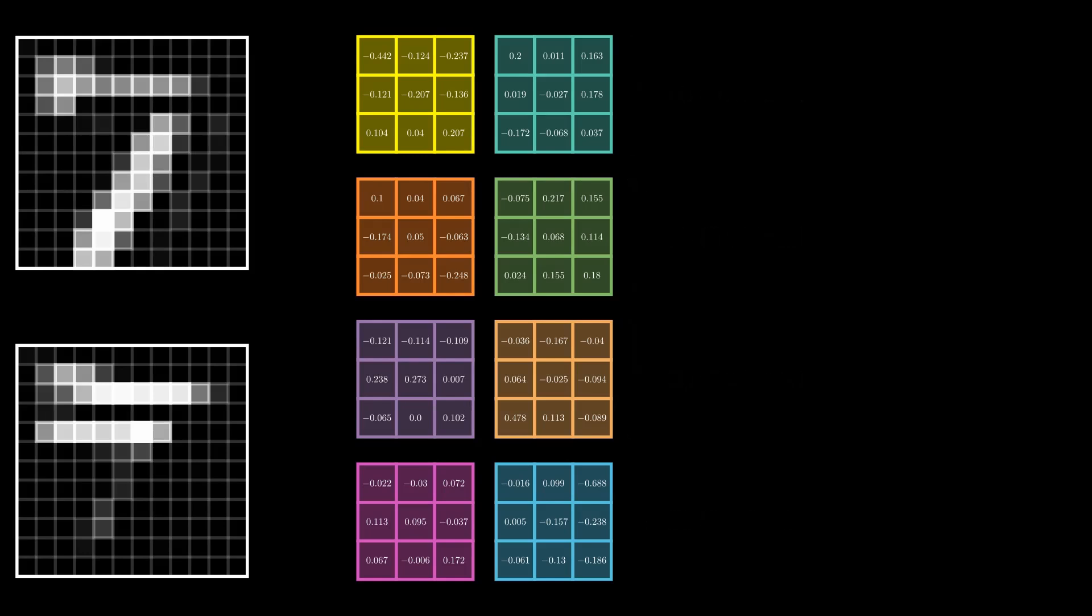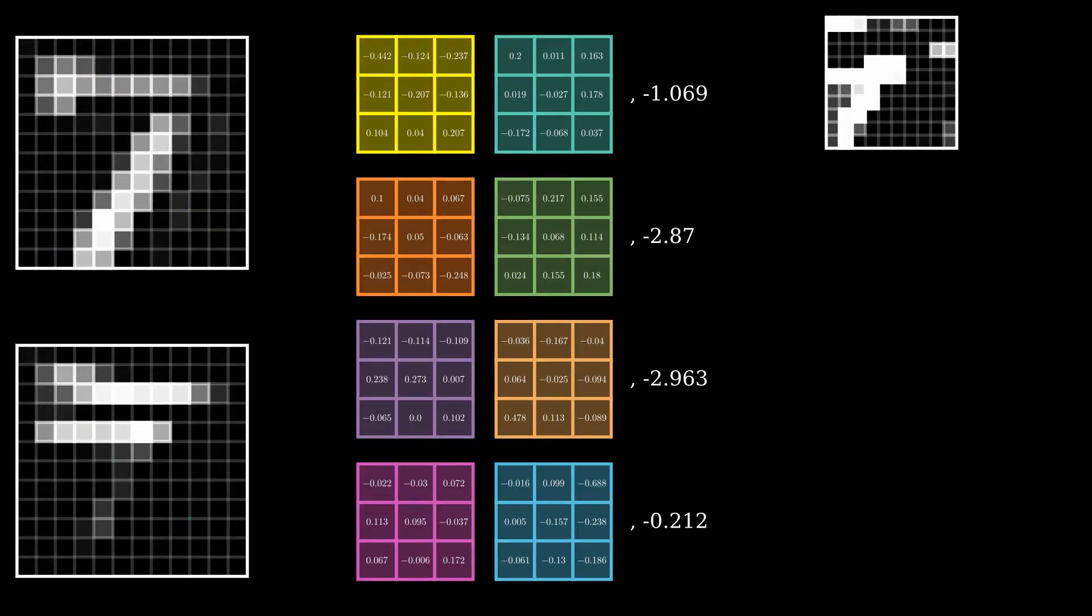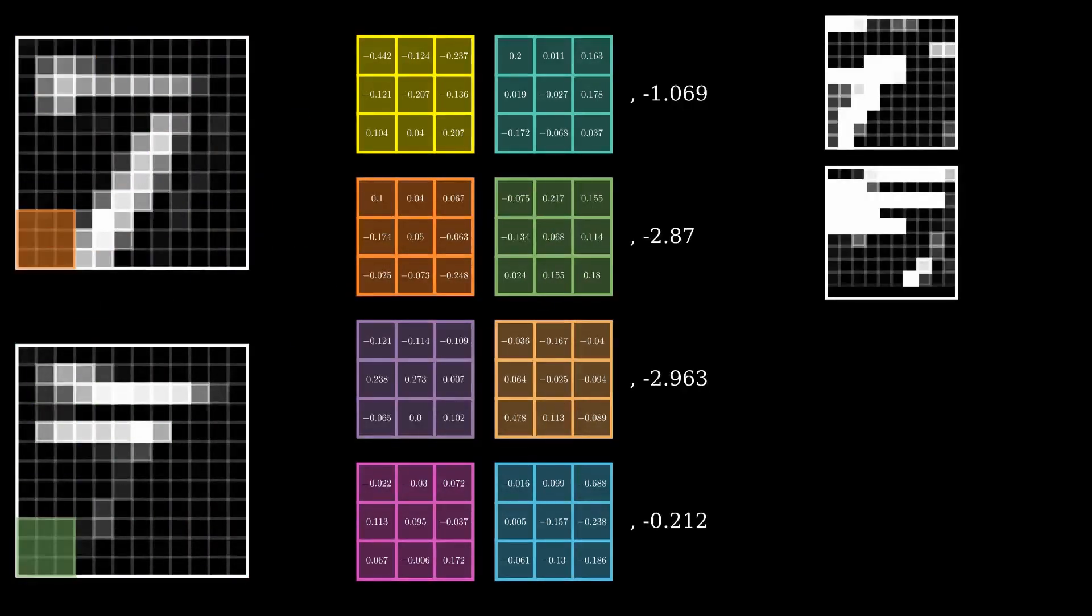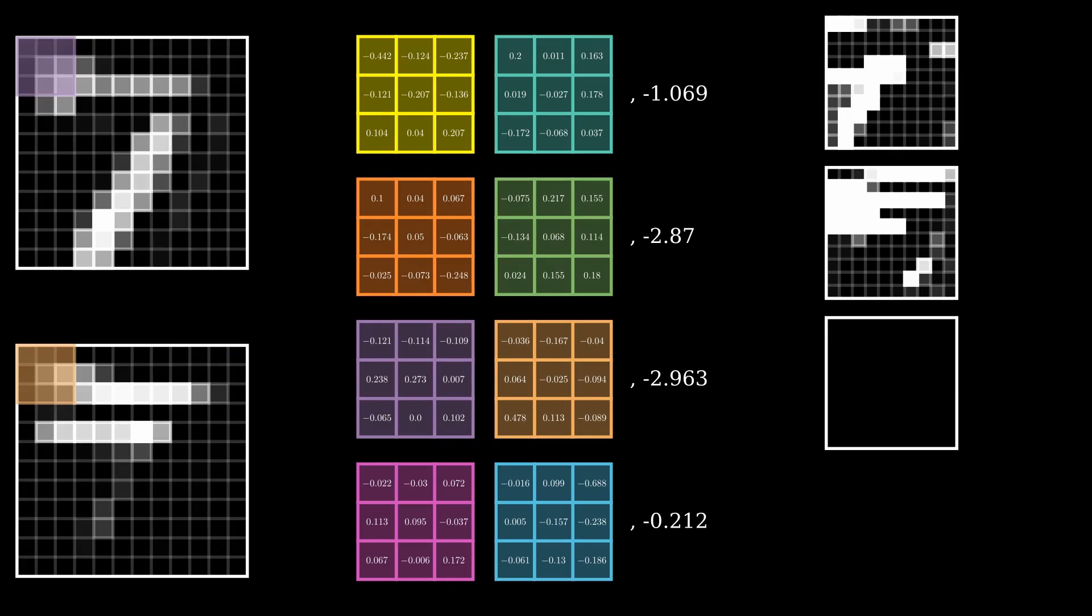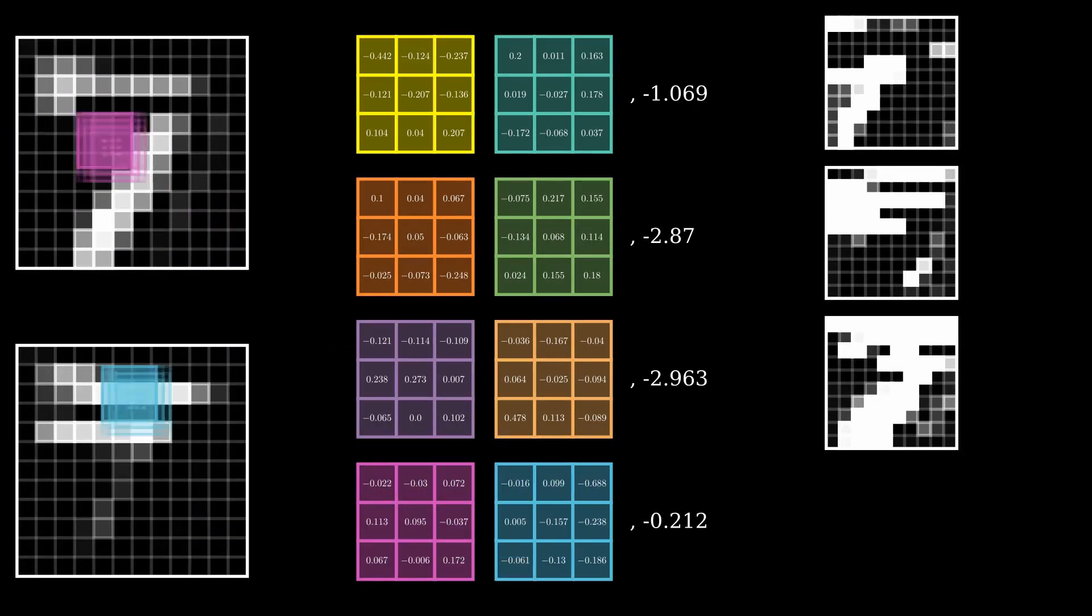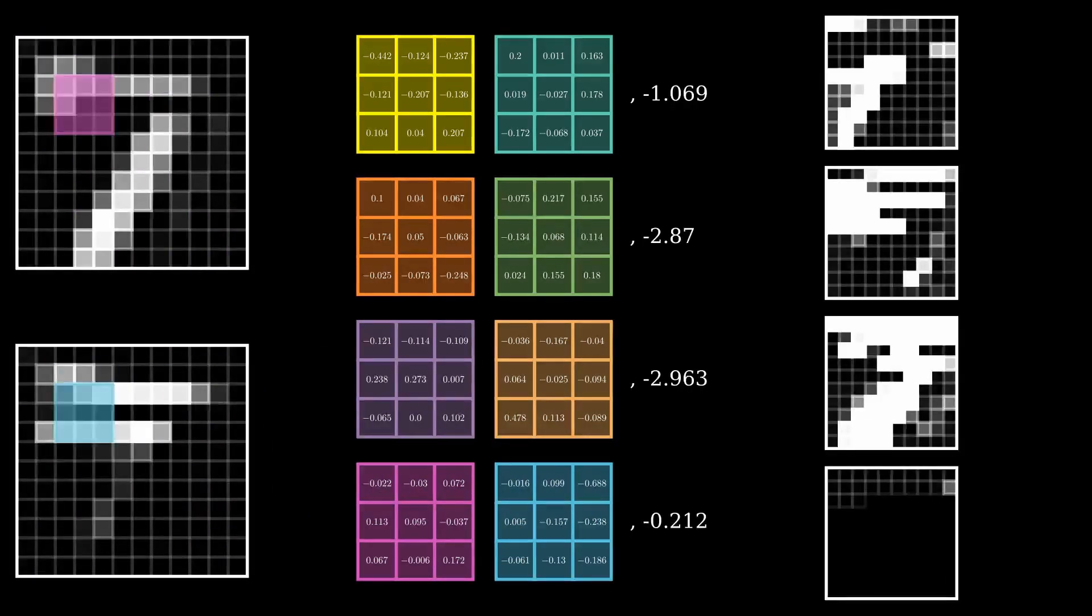In addition, we also have 1 bias for each filter. Running the convolution will return 4 outputs, 1 for each filter. As you can see, we kind of lose the idea of what the original image was.